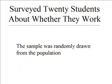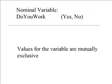For this scenario, let's say we surveyed 20 students about whether they work. The sample was randomly drawn from the population — that is, representative — so it would be appropriate to generalize to the population as a whole. The survey had the question 'do you work?' with possible responses yes and no. In terms of the second requirement, these two responses are mutually exclusive: someone would select one or the other, not both.